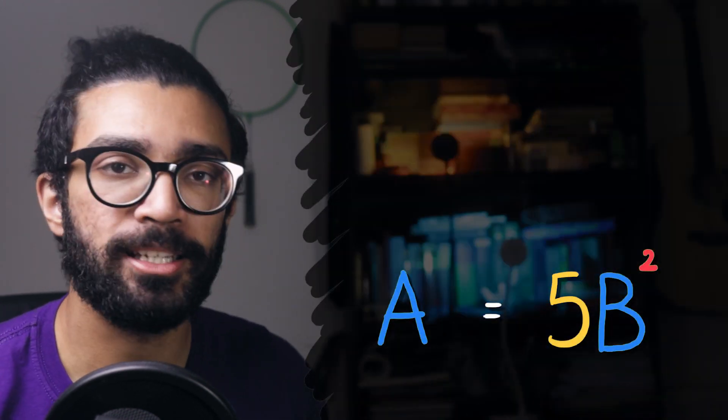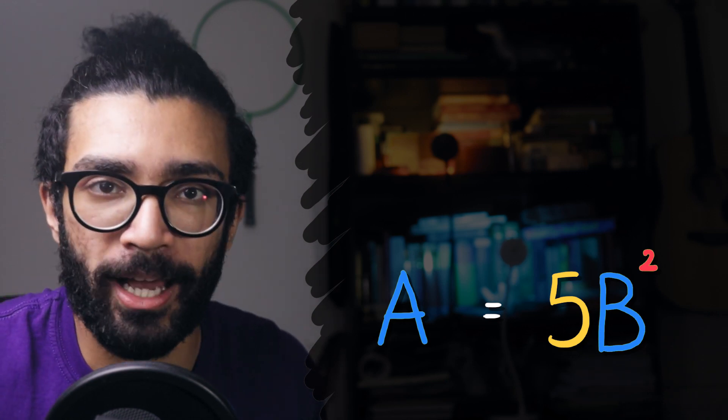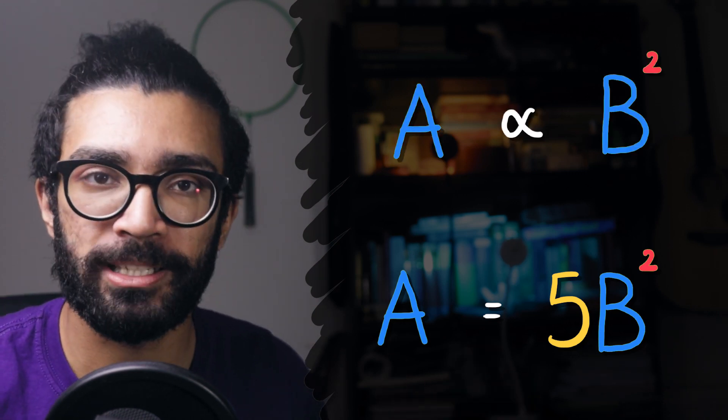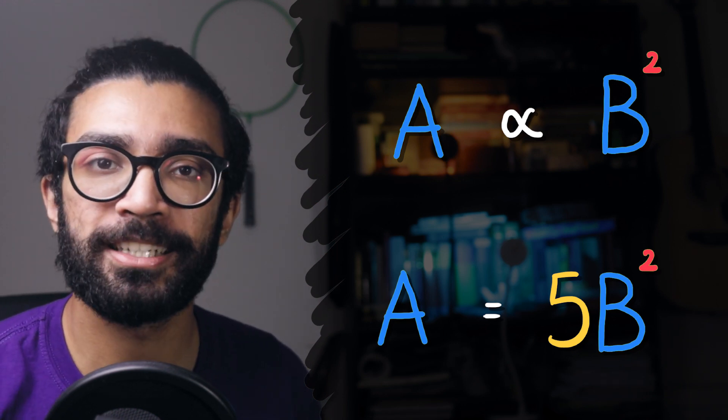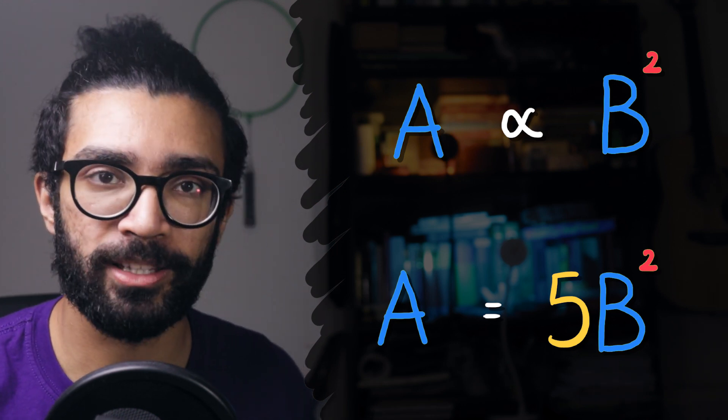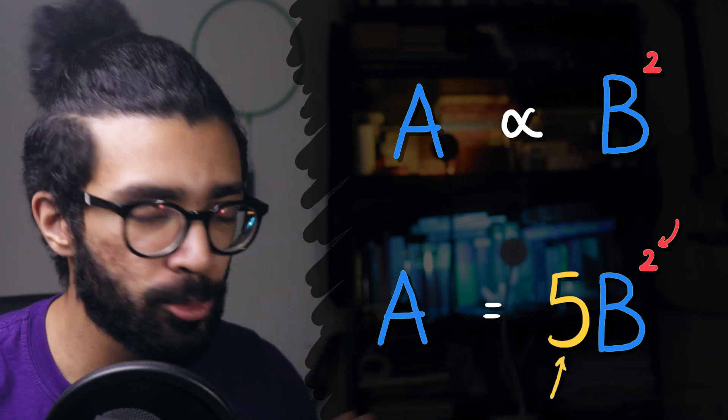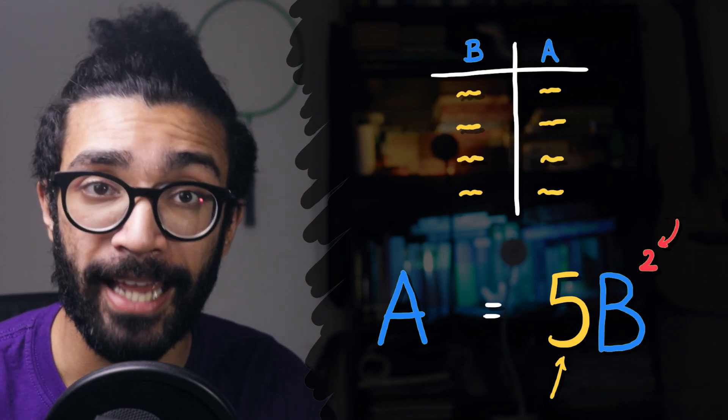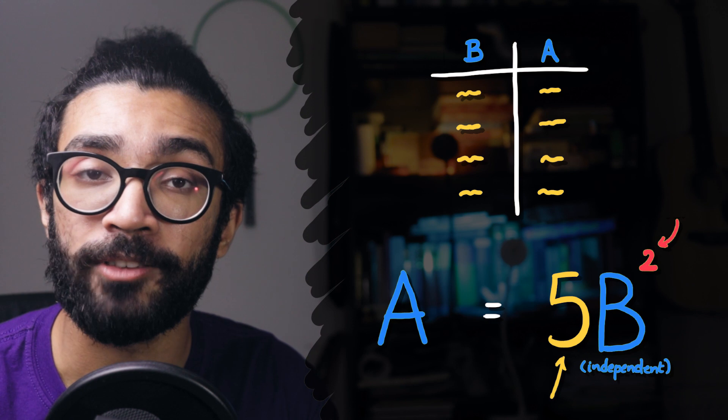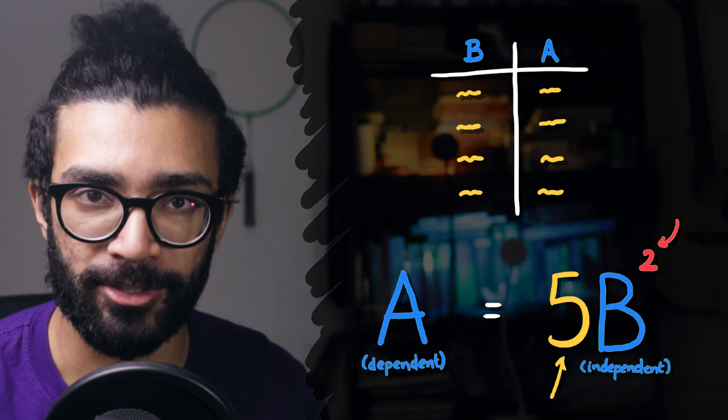To do this, let's first assume that theory tells us that we are trying to verify the relationship A is equal to 5B squared. So in this case, A is proportional to B squared, and the proportionality constant is 5. And we're trying to conduct an experiment in order to verify whether the values of 5 for the proportionality constant and 2 for the power are reasonable. And we go about, as usual, conducting our experiment and take our values of B and A. In this case, B is the independent variable, and A is the variable that depends on B.